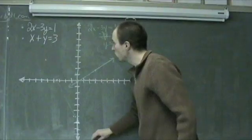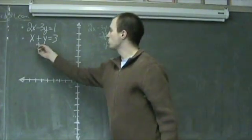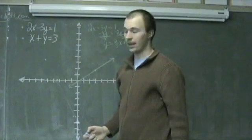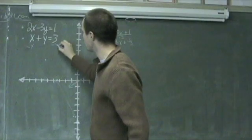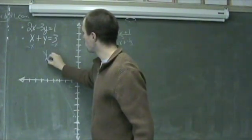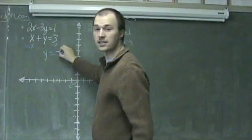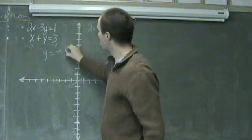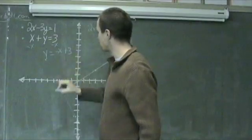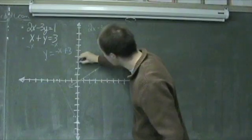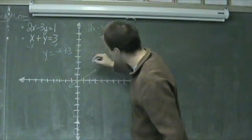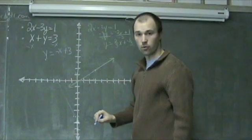Now, graphing in blue my second equation, x + y = 3. I'm going to subtract x from both sides to get it into slope-intercept form, and I find y = -x + 3, which means I have a y-intercept at positive 3 and a slope of -1.